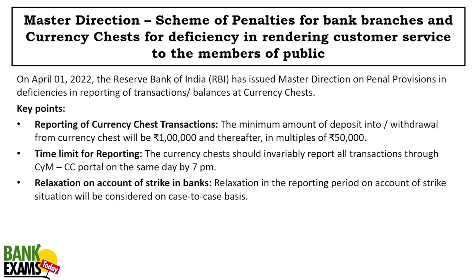Master Direction: Scheme of Penalties for Bank Branches and Currency Chests for Deficiency in Rendering Customer Service to Members of Public. On 1st April, RBI issued master directions on penal provisions in case of deficiency in reporting of transactions and balances at Currency Chests. If transactions at Currency Chests are not properly reported and there is a deficiency, some penalties apply.